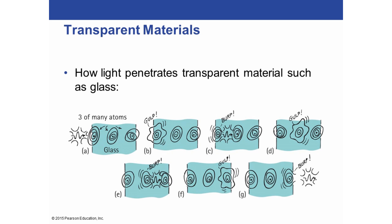Let's look at how light can penetrate a transparent material such as glass. Light can pass through some objects — we call those transparent — and it does not pass through others, which we call opaque. In glass, what happens is that a vibrating electron will hit the glass, causing one of the electrons within the glass to start vibrating. That electron bumps into the next electron over, causing it to start vibrating, and so on until the vibration moves through all the electrons in the glass.